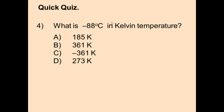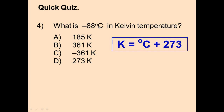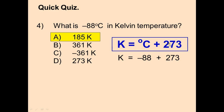What is negative 88°C in Kelvin? The formula is to add 273 to Celsius. So 273 minus 88. If you subtract 73 from 273 you get 200, and 88 is close to 73, so the answer must be close to 200. The only answer close to 200 is A — 185 K.